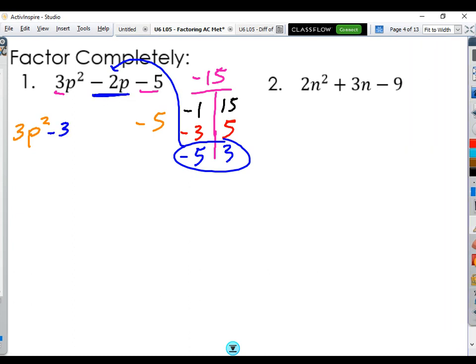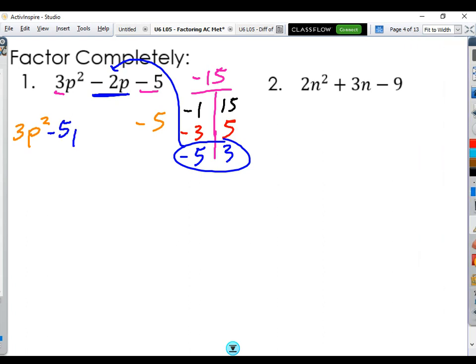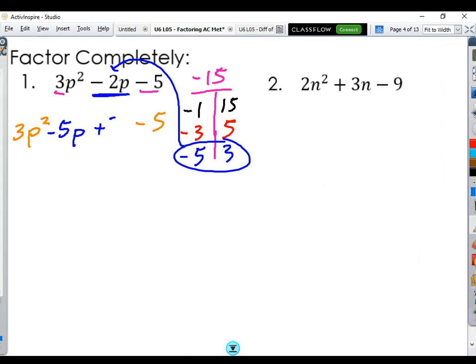Our negative 5, I'm going to set up negative 5p plus 3p. Negative 5p plus 3p.